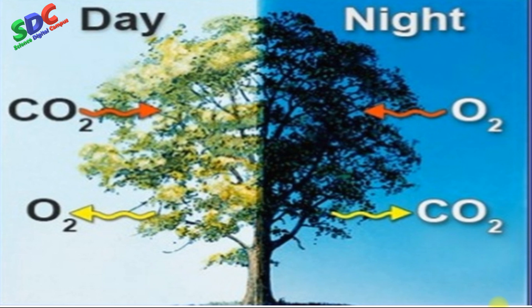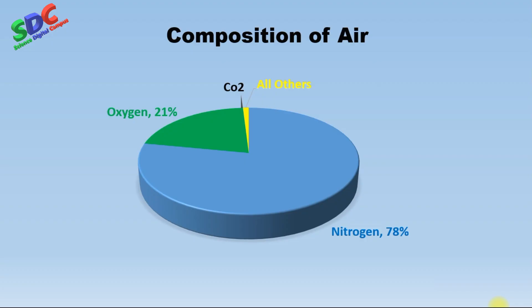Photosynthesis takes place only during daytime when there is sunlight. During the day, plants take in carbon dioxide and give out oxygen. During the night, plants take in oxygen and release carbon dioxide. In this way, plants balance the levels of oxygen and carbon dioxide in the environment. So nitrogen, oxygen, and carbon dioxide are the major gases in the air.